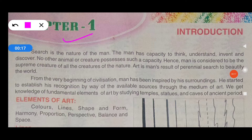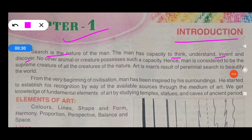Today we will study Chapter 1, main introduction. Search is the nature of man. The man has capacity to think, understand, invent and discover. No other animal or creature possesses such a capacity. Hence man is considered to be the supreme creature of all the creatures of nature. Art is man's result of perennial search to beautify the world.